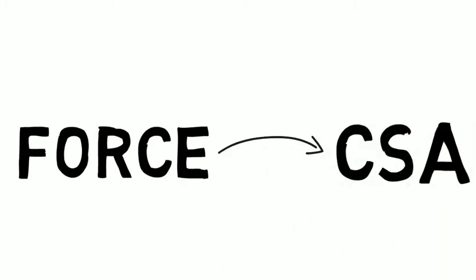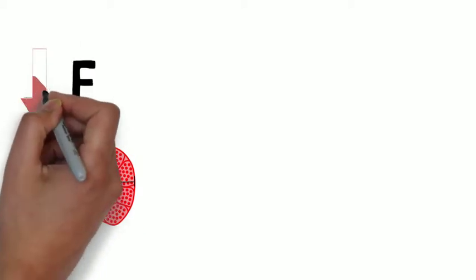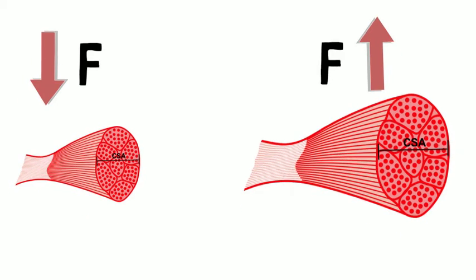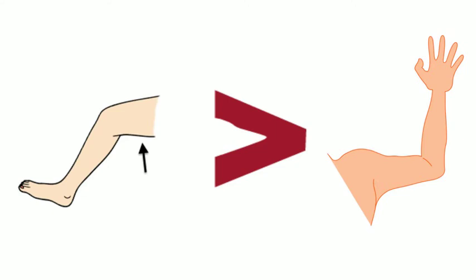The force of a muscle is directly dependent upon its cross-sectional area. Thus, a muscle of a smaller cross-sectional area provides less force than a muscle of a larger cross-sectional area. For example, the muscles in your thighs are much stronger than the muscles in your forearms.